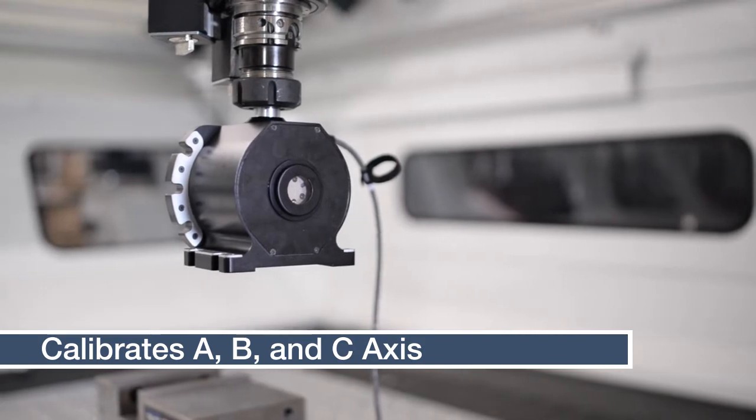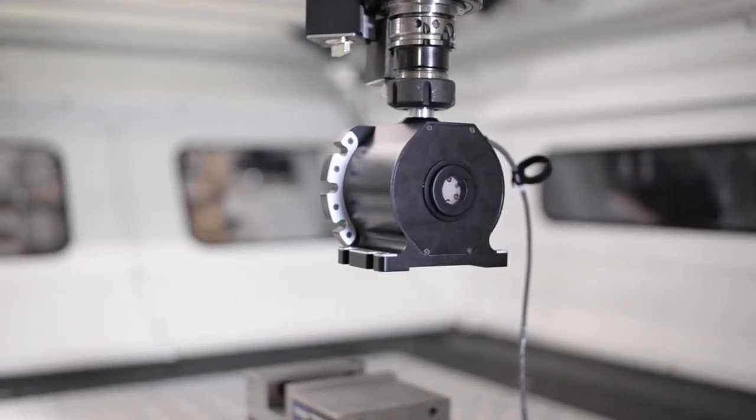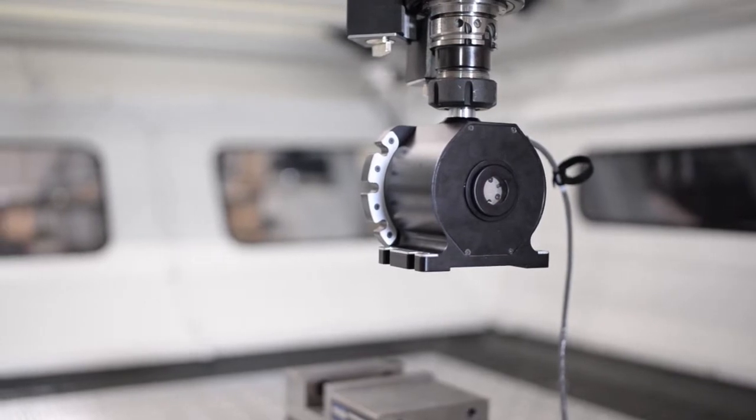By calibrating or validating the A, B, and C axes of your CNC, the swivel check completes the accuracy and performance measurements of your machine.